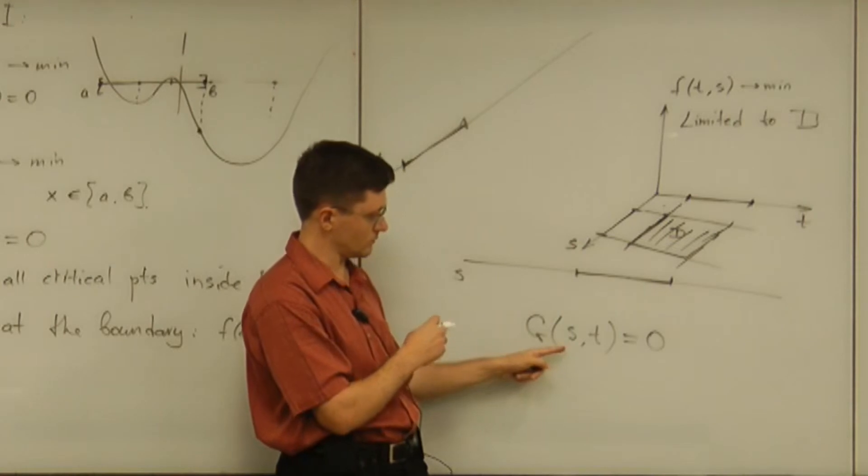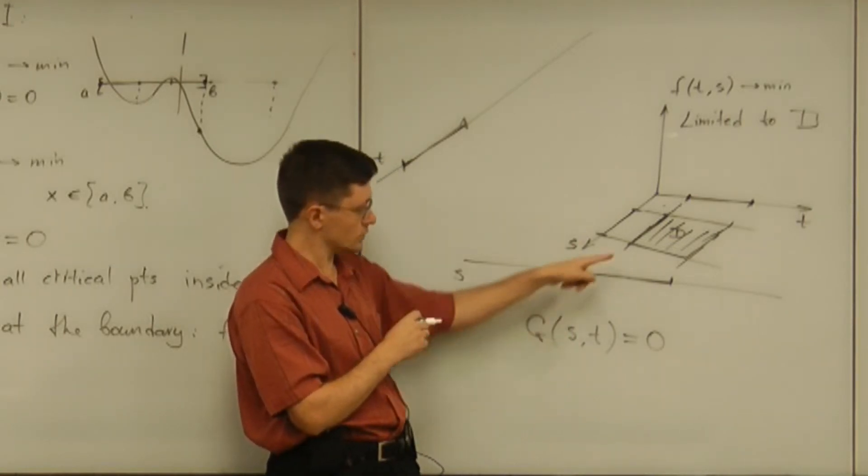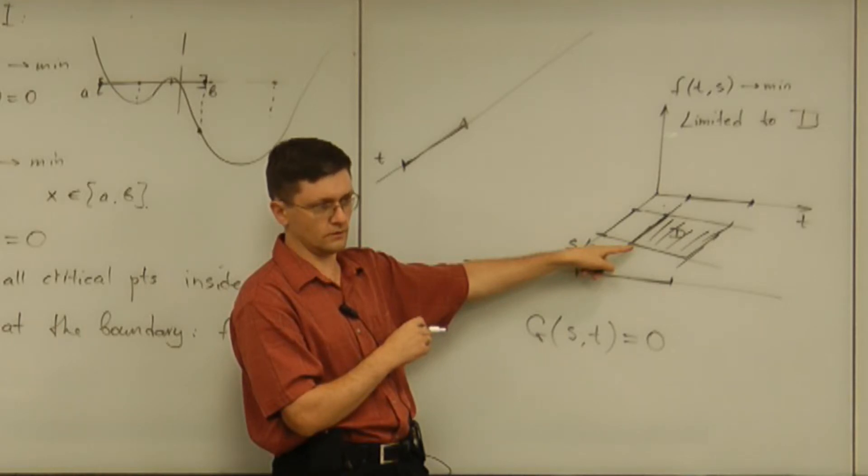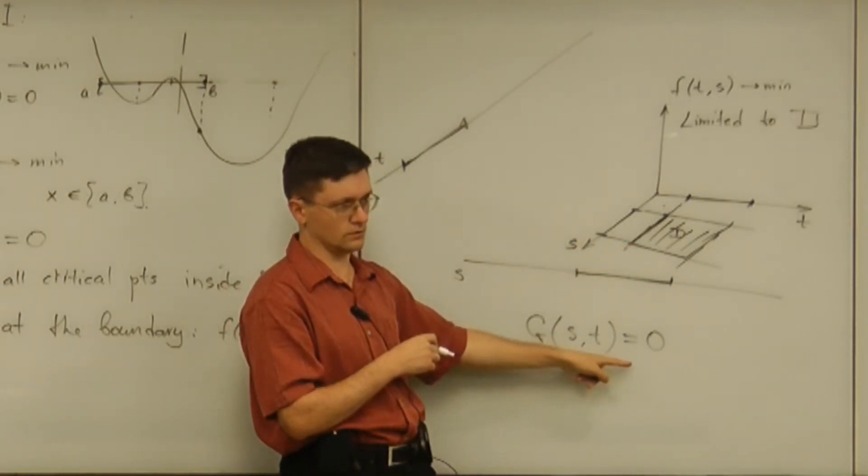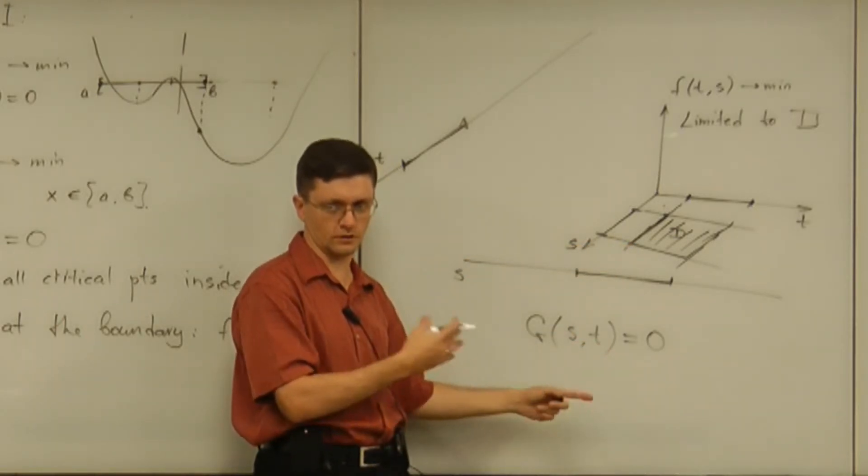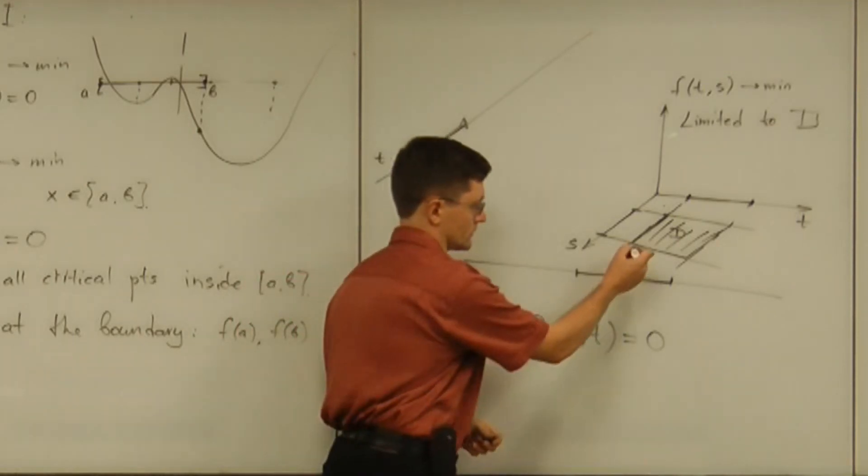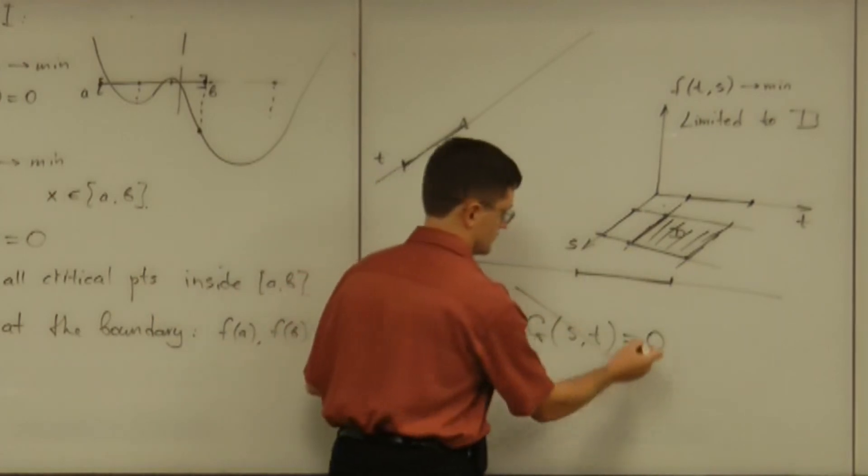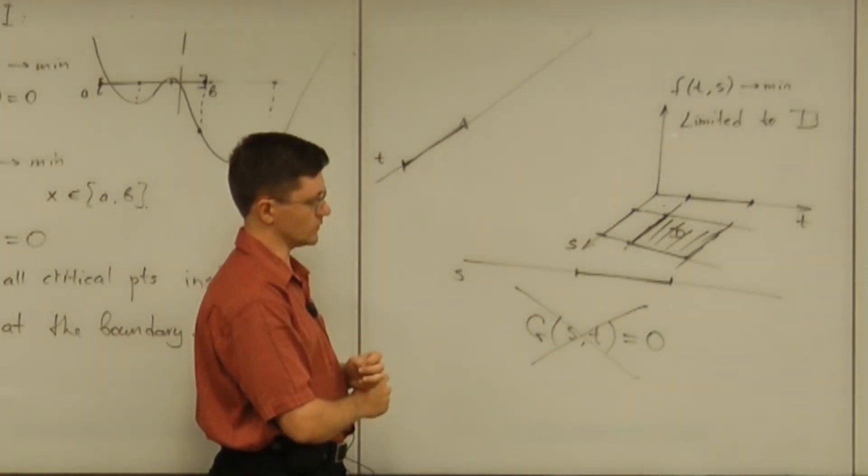And that curve, the problem about that curve is that that curve will not be linearizable at the corners. So, even if you figure out the equation, you will not be able to follow the calculus procedure because of those exceptional corners. So, that is impossible.